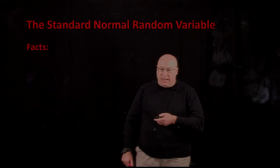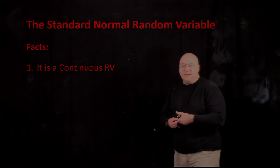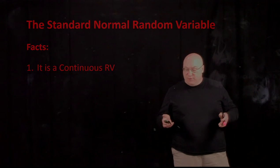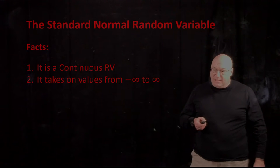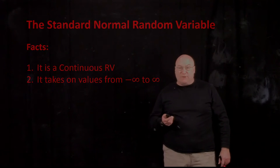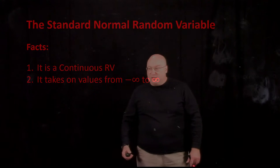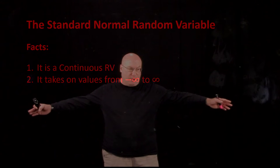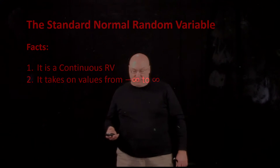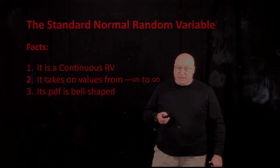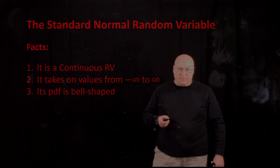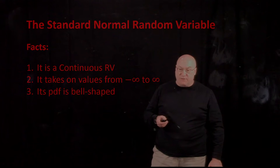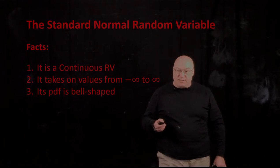Here are some facts about the Standard Normal Random Variable. Fact number one: it is a continuous random variable, so it takes on values inside an interval — infinitely many values. It takes on all possible values from minus infinity to infinity, spread all along the real number line, with not a single value missing.